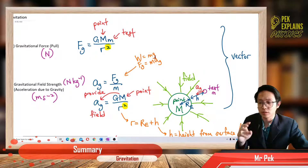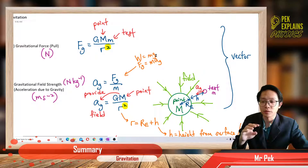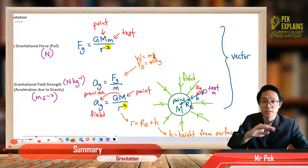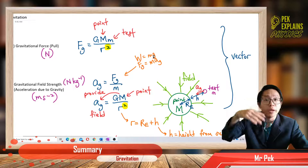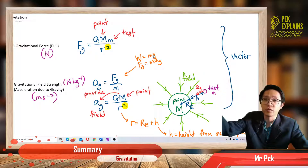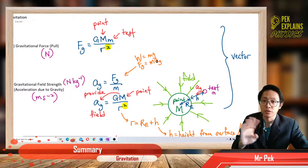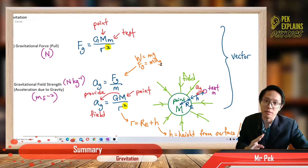Because g — g is only the value 9.81 — that value of 9.81 only exists on the surface of Earth. When you go away from the surface of Earth, go further and further away, then the value is no longer 9.81. It will become less than that, less than 9.81. That's why we put ag.